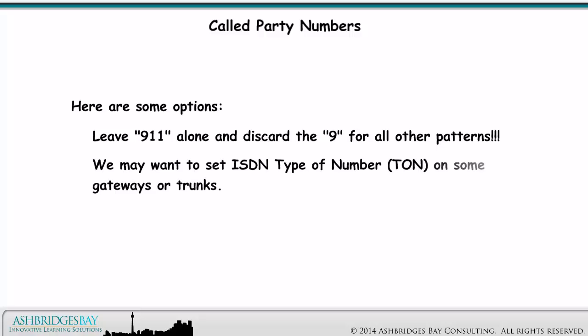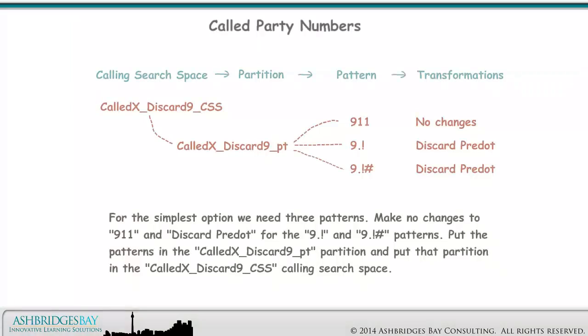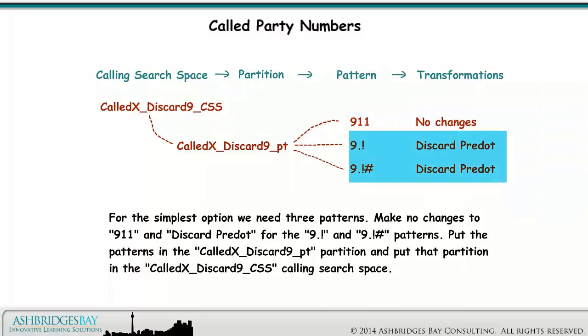We may want to set ISDN type of number on some gateways or trunks. We have a SIP trunk or other gateway using E.164. For the simplest option, we need three patterns: make no changes to 911, and discard PREDOT for the 9 dot exclamation and 9 dot exclamation pound patterns.